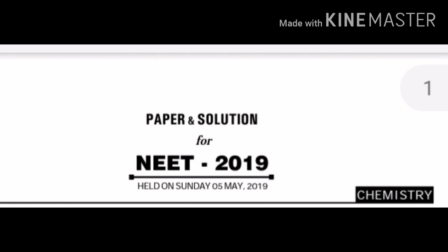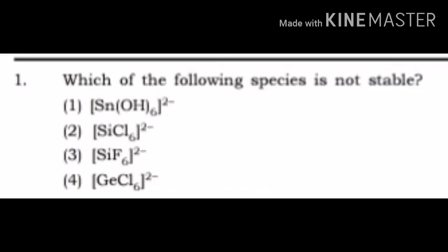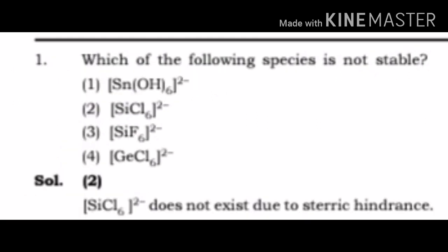First question: which of the following species is not stable? The correct option is 2. This is because silicon is comparatively small and 6 big chlorine atoms attached to it make it sterically hindered, due to which it does not form a stable complex.